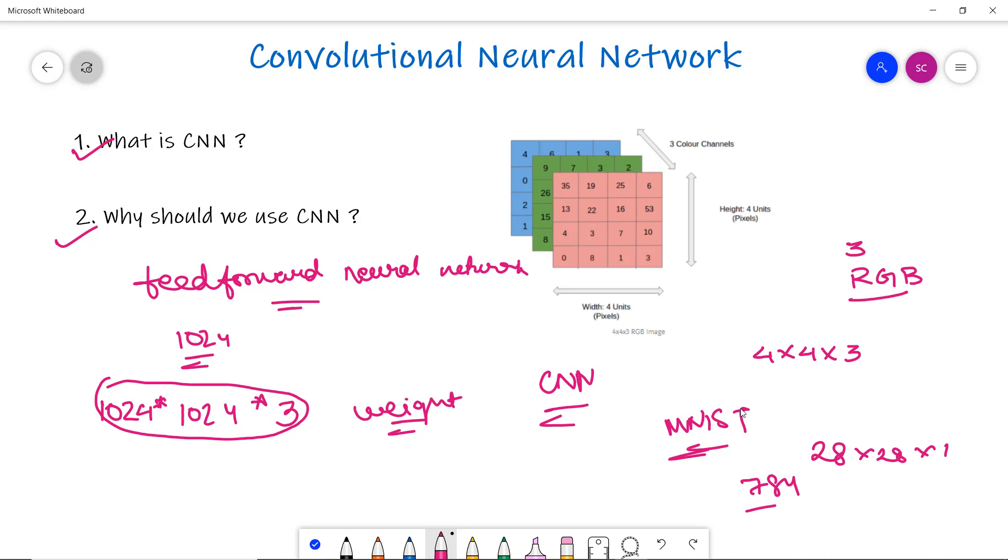This is a huge number of neurons required for operation, and it is computationally ineffective. So here comes CNN, as it extracts the features of the image and converts it into lower dimensions without losing the characteristics. That's why we use CNN—because it is much more effective.